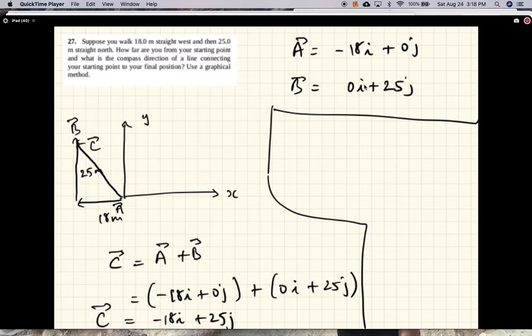And now the magnitude of C would be square root of 18 squared plus 25 squared. So that equals 30.8 meters. So what we're saying is this distance, this length, is 30.8 meters.